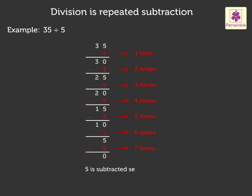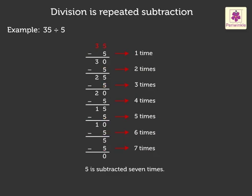Here, 5 is subtracted repeatedly 7 times from the number 35 to get the remainder as 0. This process of repeated subtraction is called division.